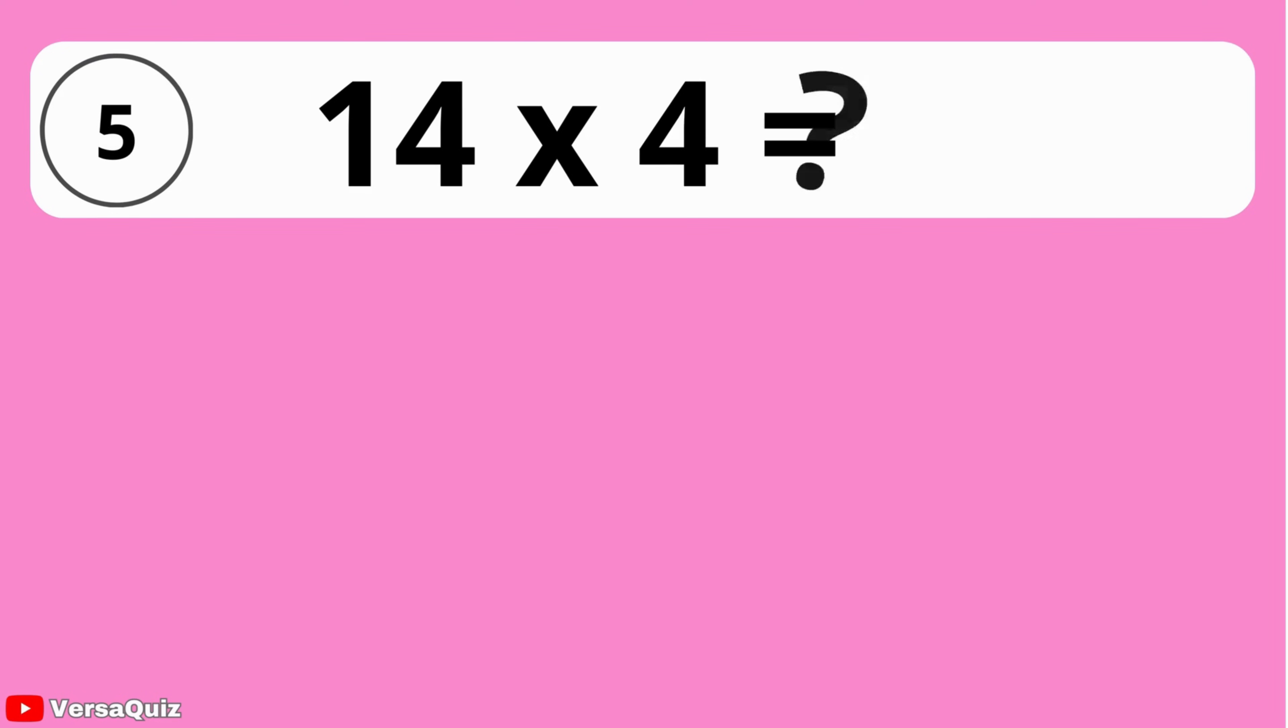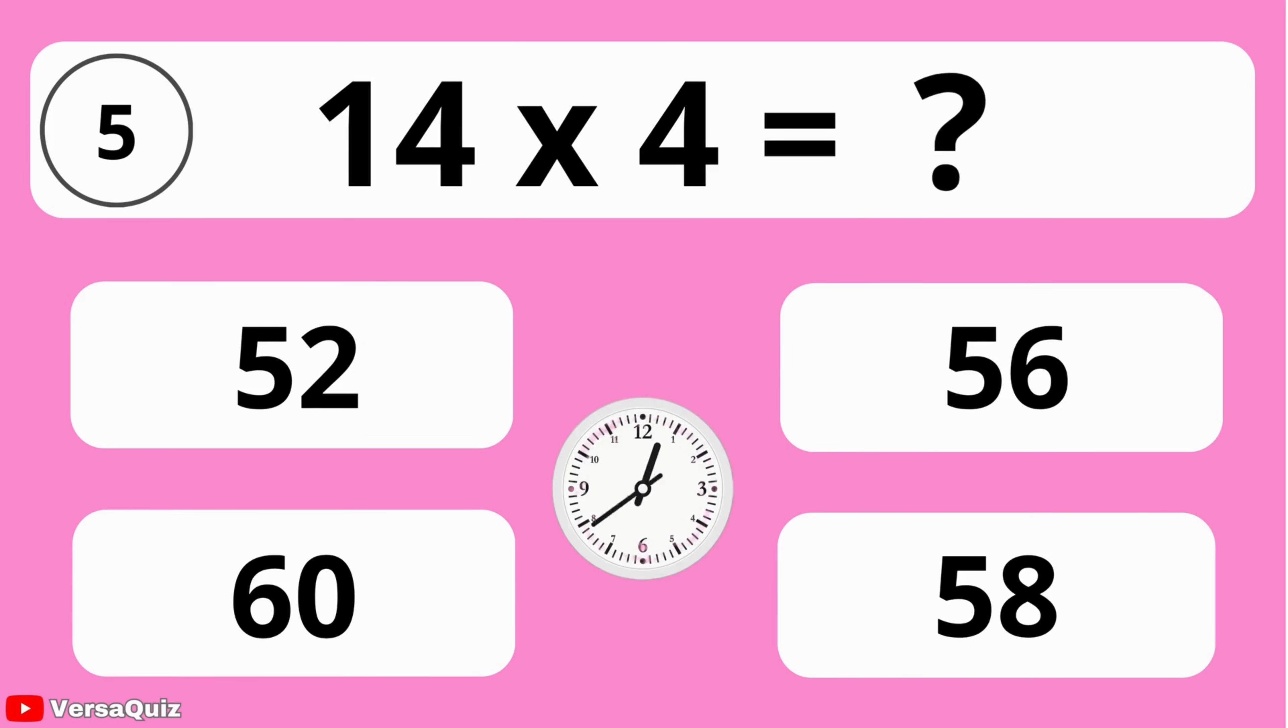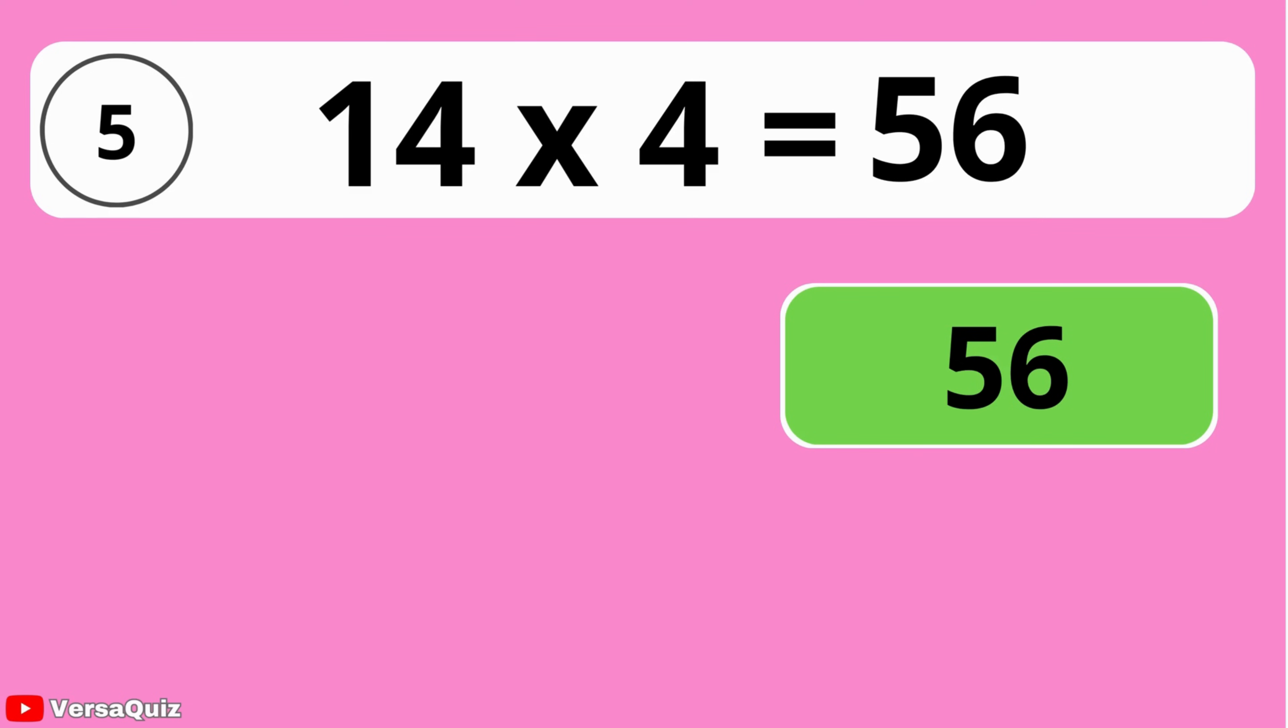What do you get when you multiply 14 by 4? 52, 56, 60, or 58? The answer is 56. Multiplying 14 by 4 gives you 56.